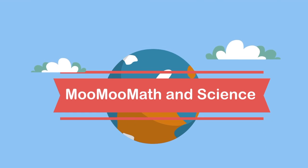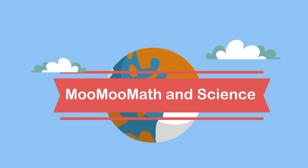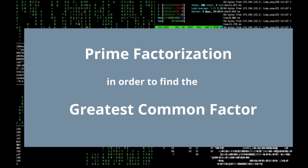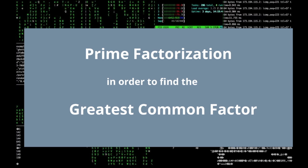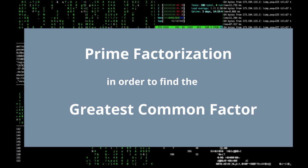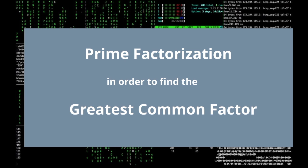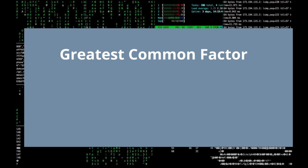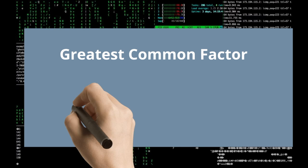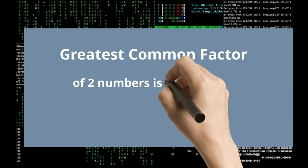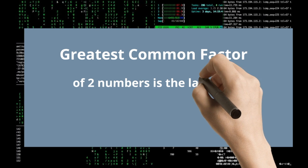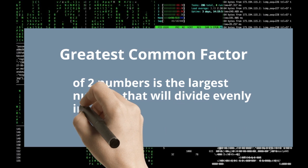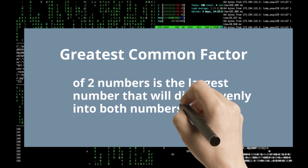Welcome to MooMooMath and Science. In this video, let's learn how to use prime factorization in order to find the greatest common factor of two or more numbers. The greatest common factor of two numbers is the largest number that divides evenly into both of these numbers. So let's get started.